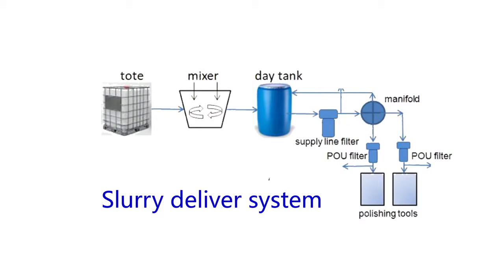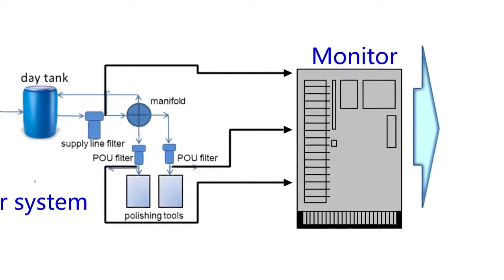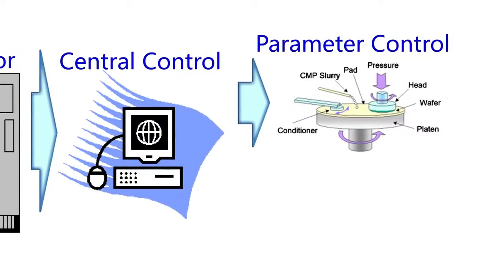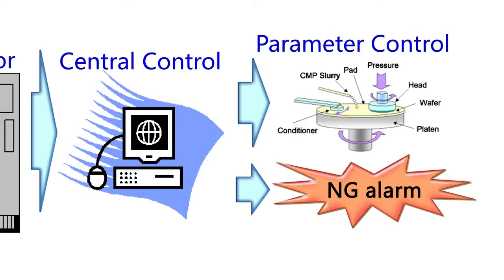As soon as particle conditions change, the process can be paused immediately. The conditions can then be adjusted to maintain the yield rate in production.